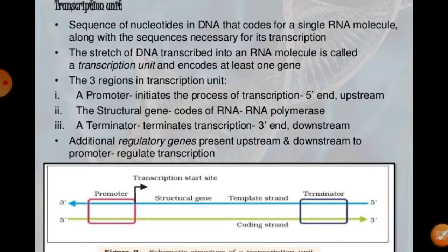The two strands of DNA have opposite polarity, and DNA-dependent RNA polymerase also catalyzes polymerization in only one direction, that is 5' to 3'. DNA has two polarities — 5' to 3' and 3' to 5'. During transcription, the strand that has polarity 3' to 5' acts as the template strand.